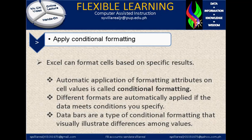Excel can format cells based on specific results, such as automatic application of formatting attributes on cell values — this is called conditional formatting. Different formats are automatically applied if the data meets conditions you specify. Data bars are a type of conditional formatting that visually illustrate differences among values.